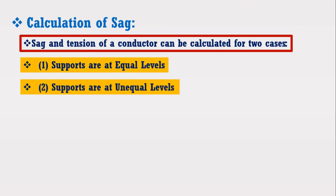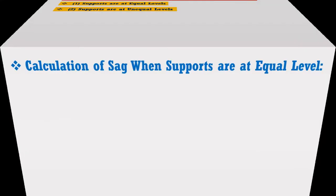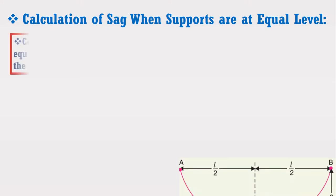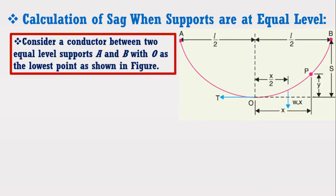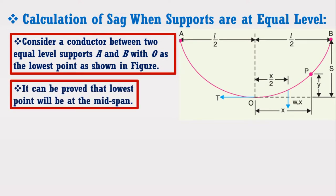I am going to derive an expression for the sag calculation when supports are at equal level. Consider a conductor between two equal level supports A and B with O as the lowest point, as shown in the figure. It can be proved that the lowest point will be at the mid span.